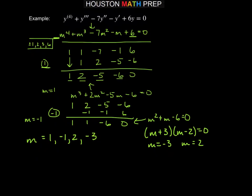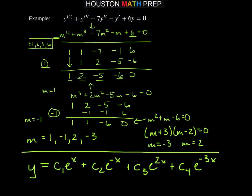And so our general solution then, if I use them in that order, will be y equals c1 e to the x plus c2 e to the minus x plus c3 e to the 2x plus c4 e to the minus 3x. Now it's certainly possible you could take these first two terms and create a cosh sinh type situation with those because those are positive and negative 1. But we'll go ahead and leave that here.